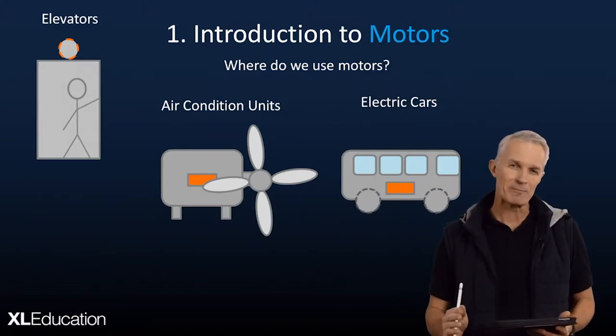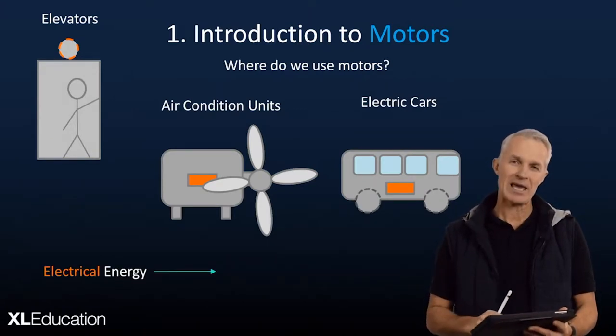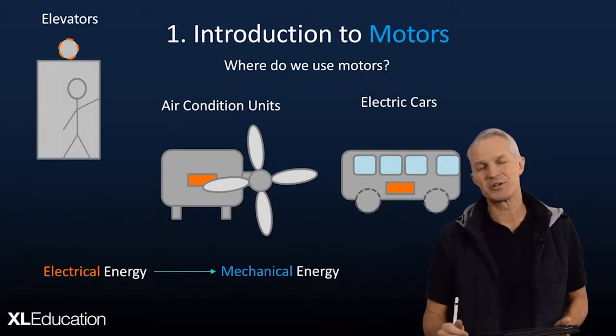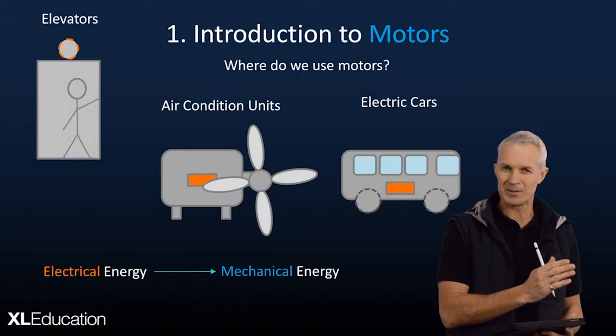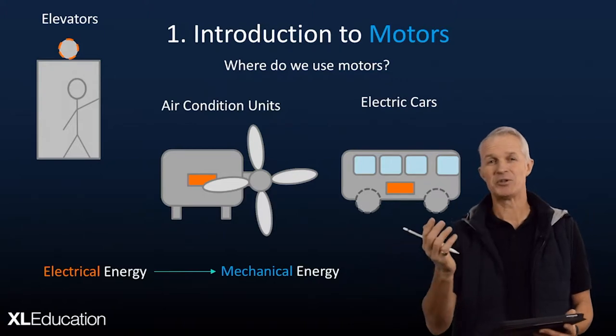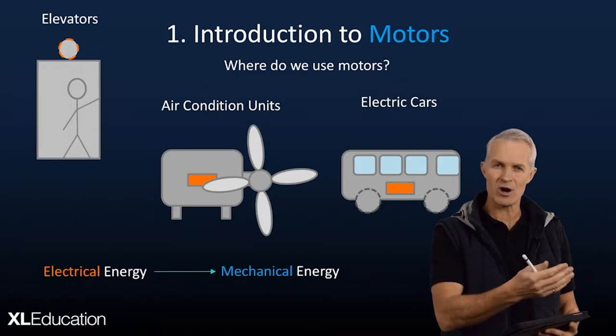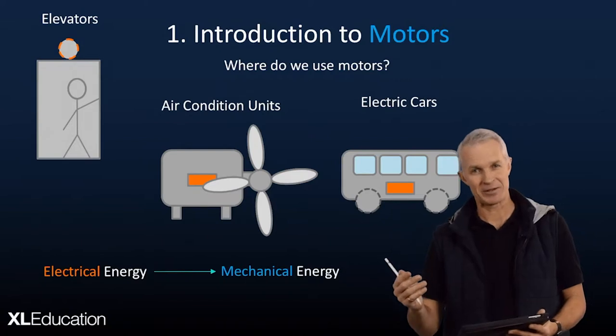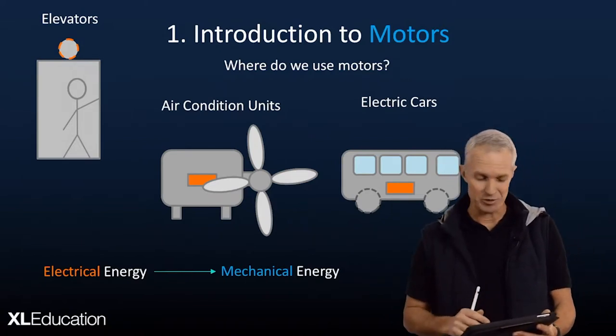So they have one thing in common and that is that they will turn electrical energy into mechanical energy. That is what a motor does. Just as a matter of interest, you might wonder what is the difference between a motor and an engine? Well, a motor turns electrical energy into mechanical energy, whereas an engine, like your normal petrol or diesel car, uses a fuel, which is chemical energy, into mechanical energy. So engines use chemical energy, motors use electrical energy.